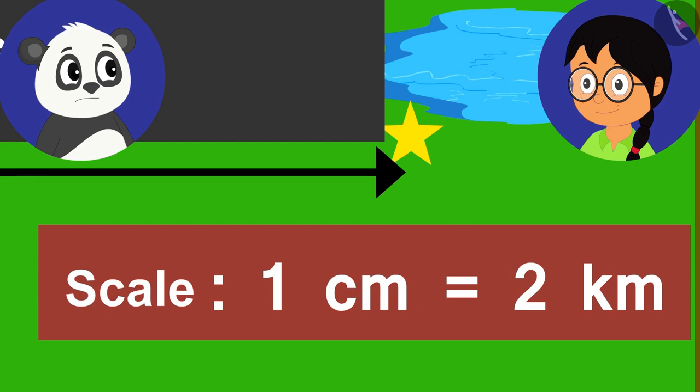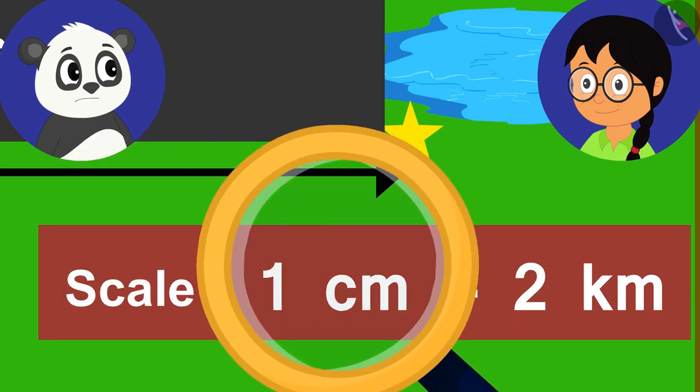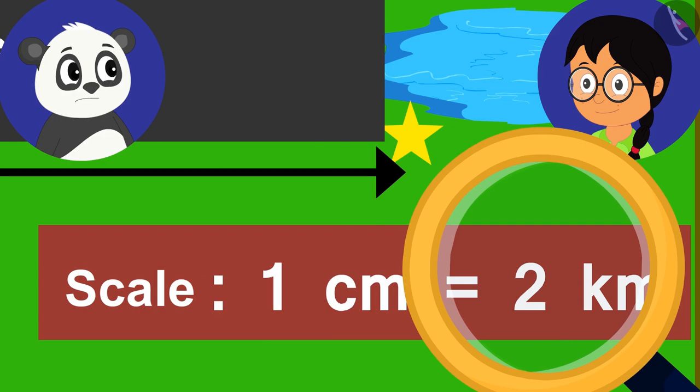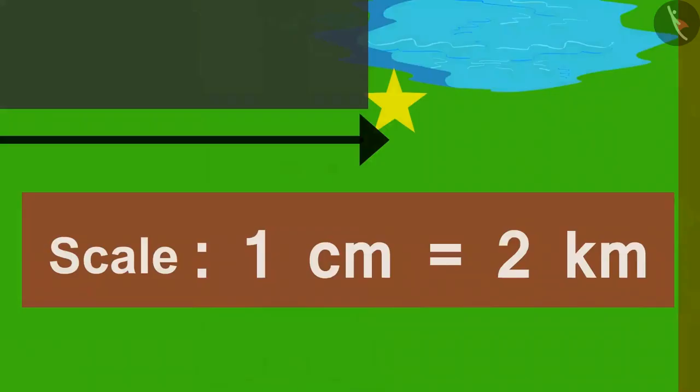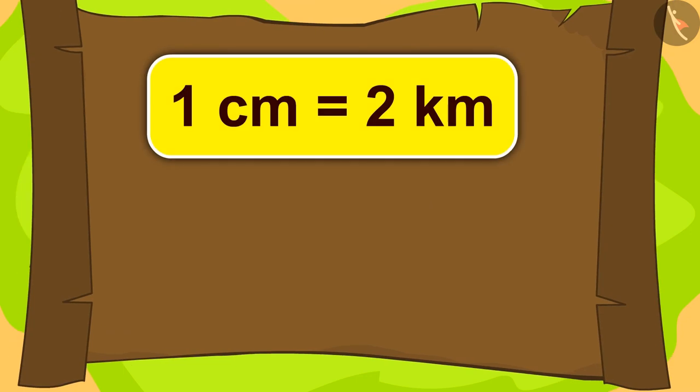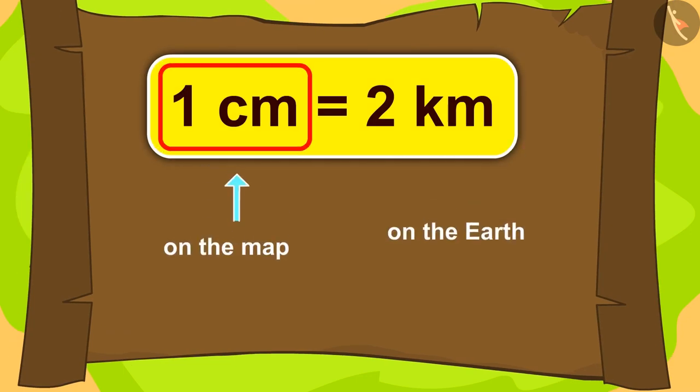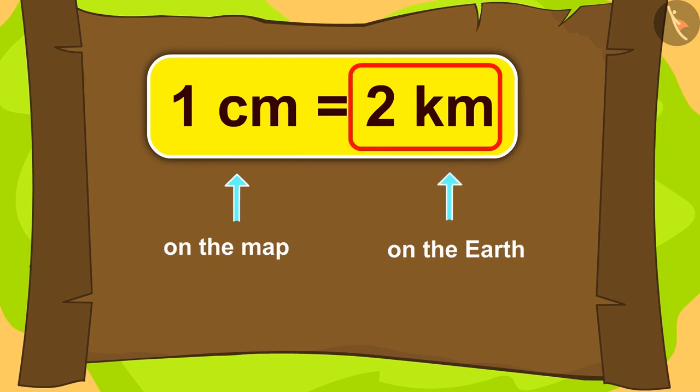As written on this map, 1 cm equals 2 km. What could it mean? This means that 1 cm of map is equal to 2 km on the earth.